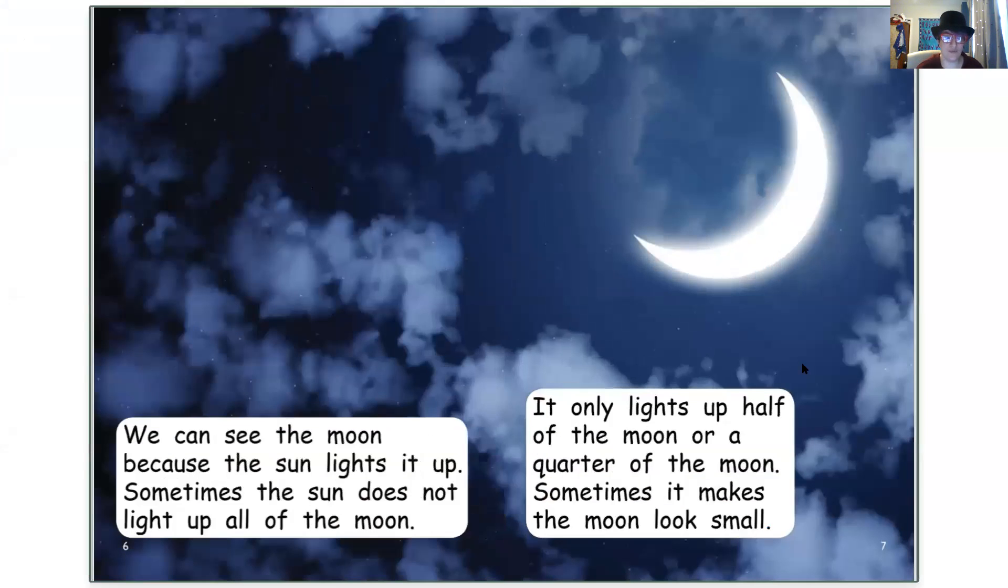We can see the moon because the sun lights it up. Sometimes the sun does not light up all of the moon. It only lights up half of the moon or a quarter of the moon. Sometimes it makes the moon look small.